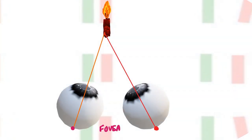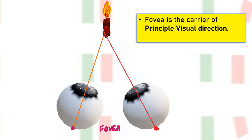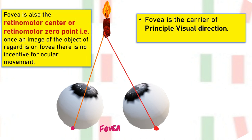This is all based upon the principle of double vision. Once you look at an object, the image is projected onto the fovea of both eyes. The fovea is considered to be the principal visual direction, and all other points on the retina are known to have secondary visual directions. The fovea is also a retinomotor zero point — once the image of the object of regard is formed on the fovea, there is no incentive for ocular movement.